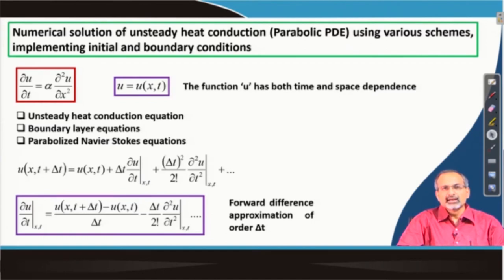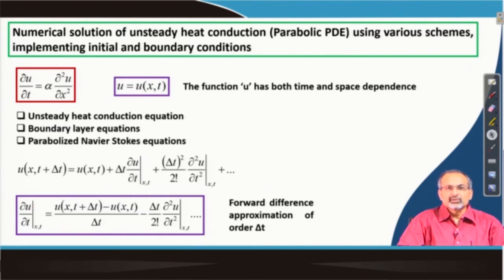You could also have parabolized Navier-Stokes equations where certain terms are modified in the original Navier-Stokes equations in order to give the equations a parabolic nature. So there are several possibilities of occurrences of parabolic partial differential equations.